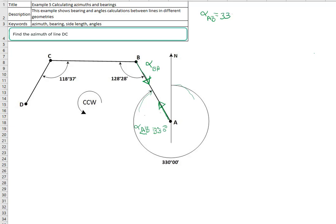Alpha AB equals 330 degrees, 0 minutes, and 0 seconds. Alpha BA equals 330. Because this is more than 180, so we will subtract 180 degrees and 0 minutes and 0 seconds, and this will equal to 150 degrees, 0 minutes, and 0 seconds.